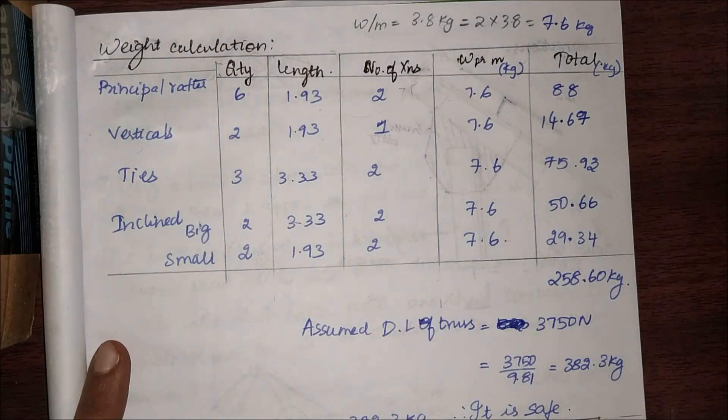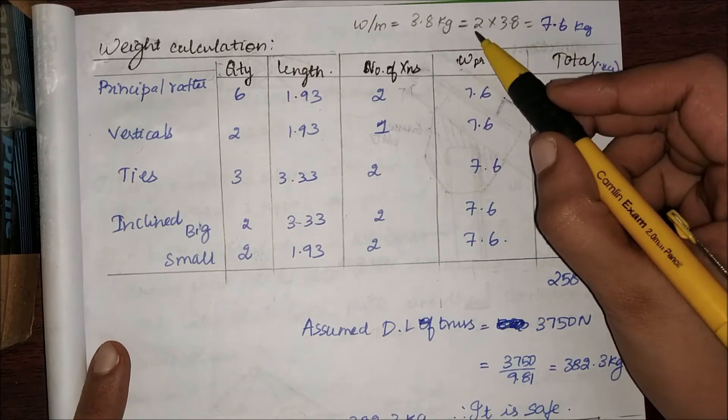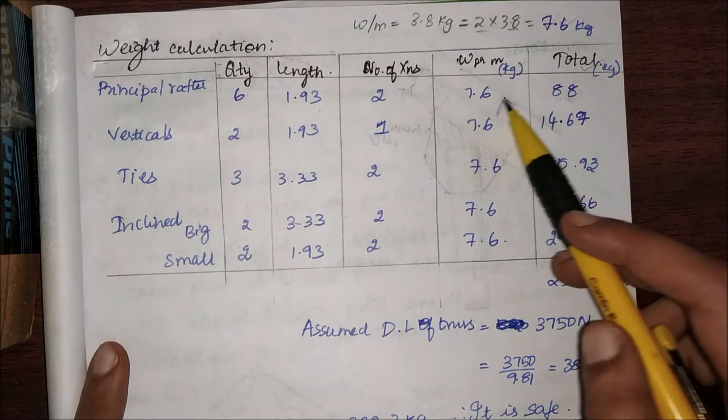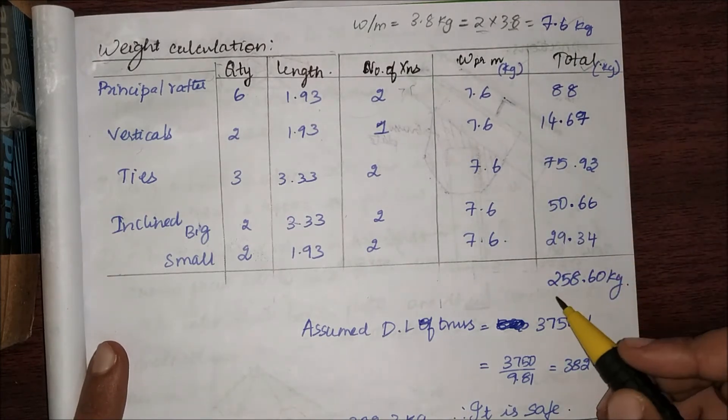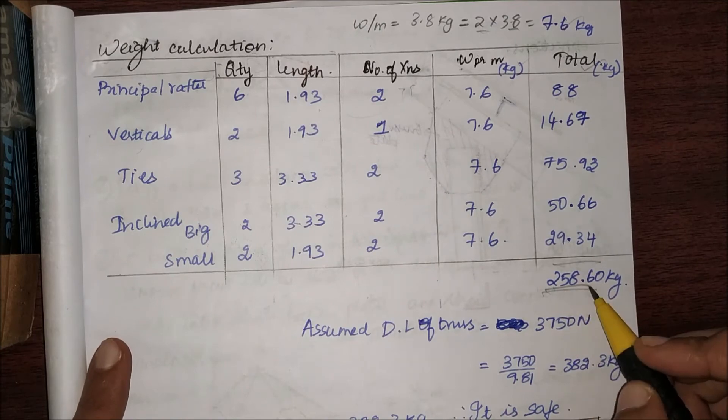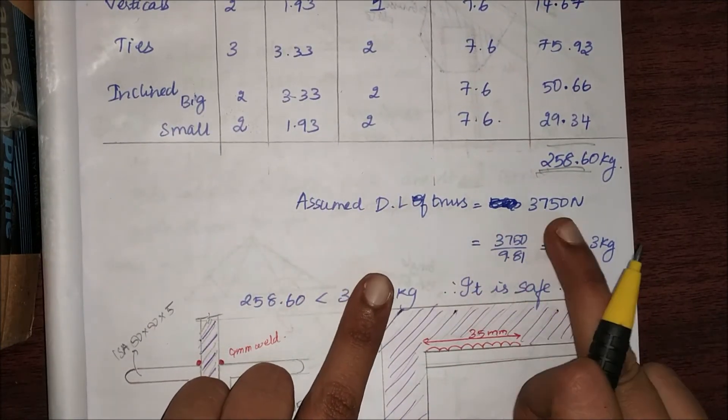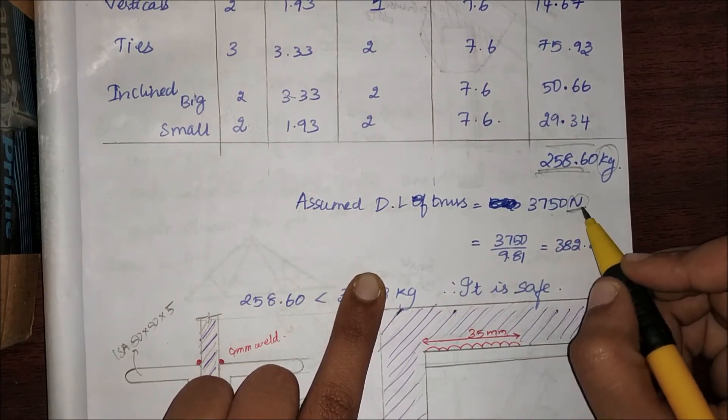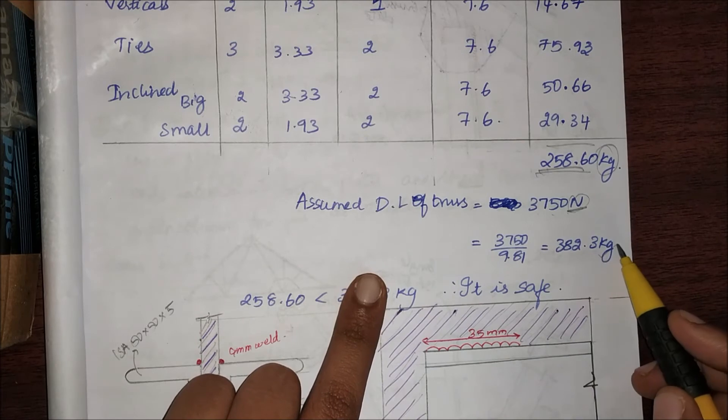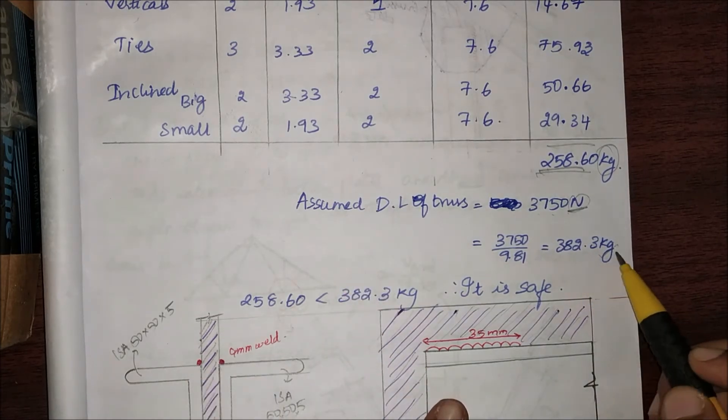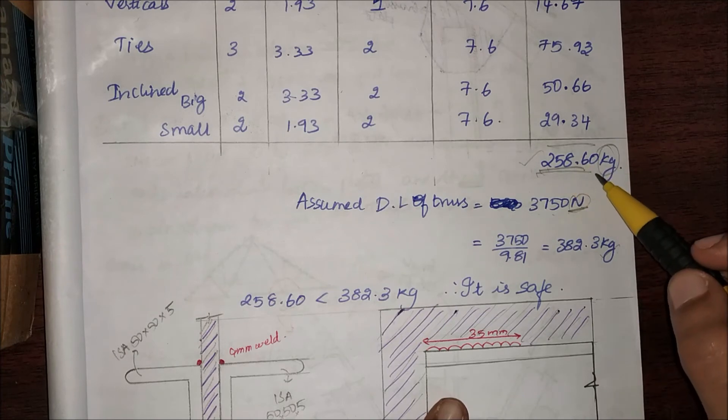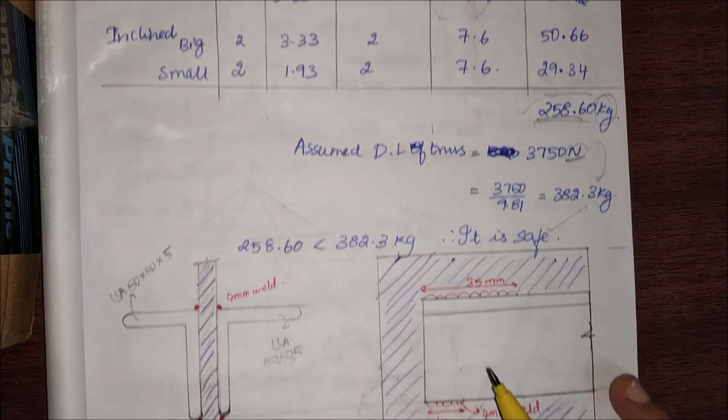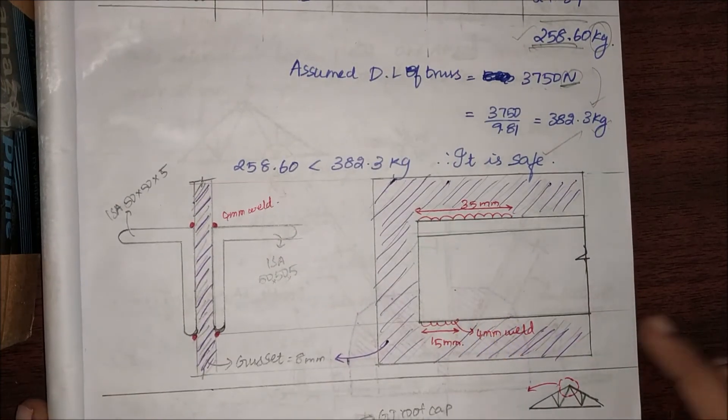If it is a double angle or single angle—for verticals alone it is a single angle—and weight per kg, you can find it from IS 800. Since we are using two angles, I'm multiplying it by two. You'll get my total weight calculation as 258 kg. Assume dead load of the truss is 3750 N; I'm going to divide it by 9.81 to get it in kg. My assumed weight is 382.3 kg, my given weight is 258.6 kg only. Therefore, since this is less, this is safe.